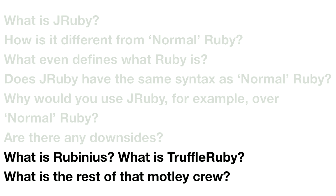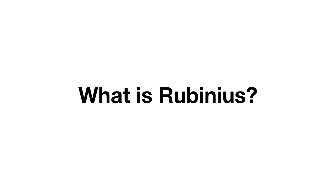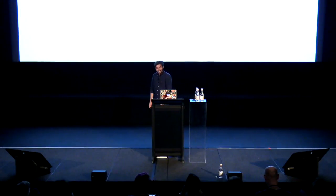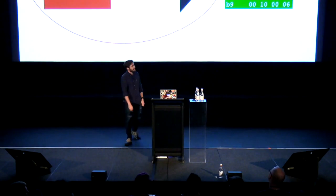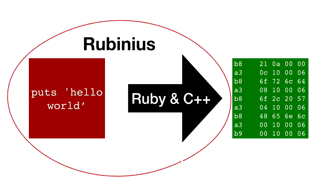So onto Rubinius, TruffleRuby, and the rest of that motley crew. We can use the knowledge we've got from JRuby to understand what these are. What is Rubinius? Rubinius is — confusingly — Ruby implemented in Ruby. But also C++. A lot of the core library is written in Ruby, and then C++ handles being fast. With Rubinius, you have no global interpreter lock so you can use multi-threading, plus generational garbage collection and a JIT compiler to speed things up. It also supports C extensions — so C extensions plus multi-threading plus fancy compiler stuff means it's a bit quicker.